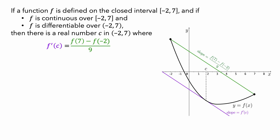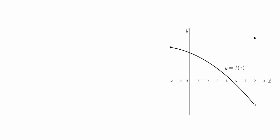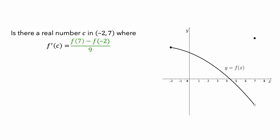Let's look at a graph of another function. Like the previous function, it is defined on the interval from negative 2 to 7. So we can ask: is there a real number c in the interval from negative 2 to 7 where f prime of c is equal to this difference quotient? Pause the video and see if you can find such a value for c. To visualize this, we'll draw a secant line between the endpoints of the graph of the function on this interval. The slope of this secant line is equal to the average rate of change of f over this interval, which is computed using the difference quotient.